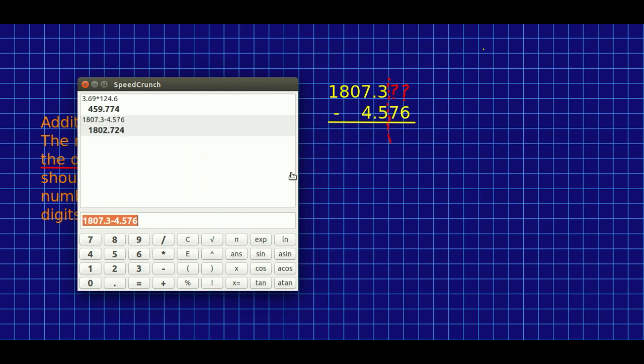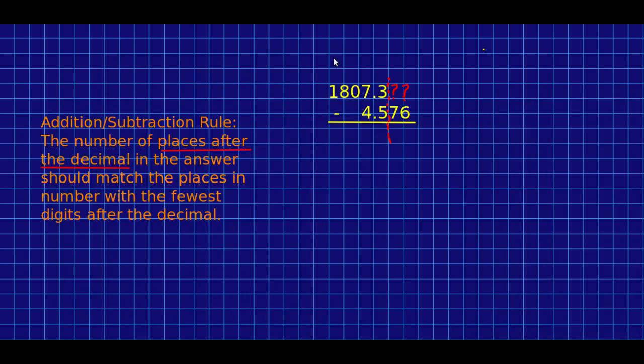Now, again, the calculator says 1802.724. So I'm going to write that all in. However, we already know that this is garbage. We don't actually know those digits. And so we should be writing down 1802.7 as our final answer.